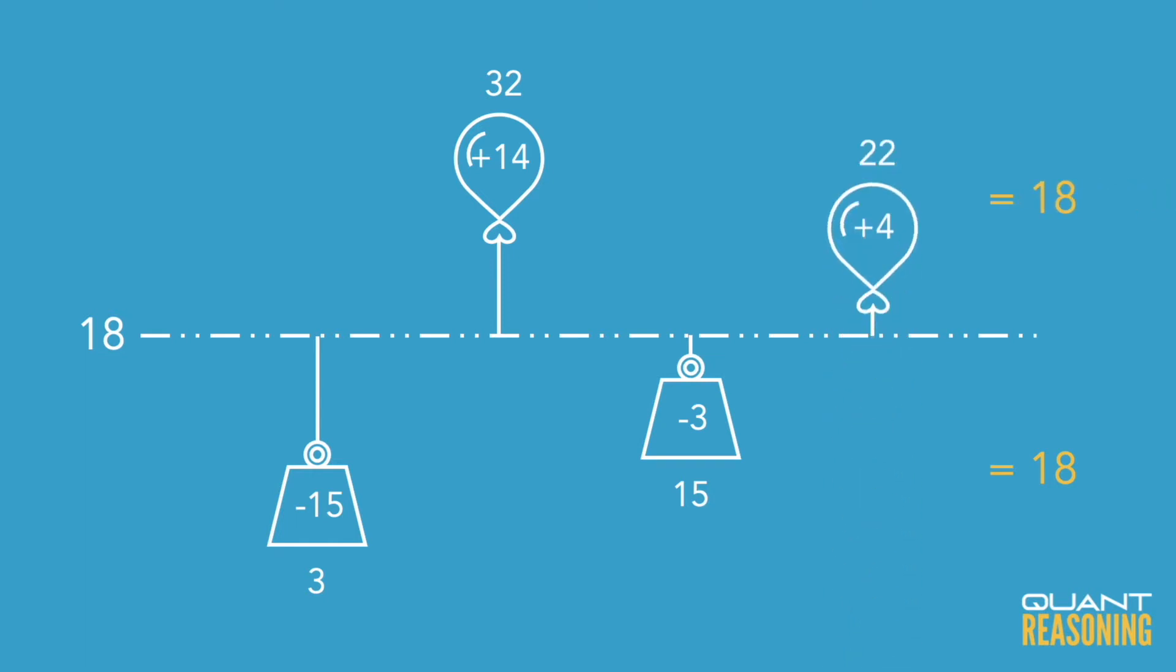To balance that, we're missing another balloon. We're going to need another balloon that's exactly four above the average, so that's 22.